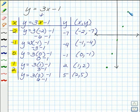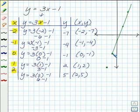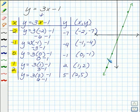We've graphed our ordered pairs, and now we connect them with a straight line. Each of the ordered pairs ended up as a point along here — we connect them with a straight line.